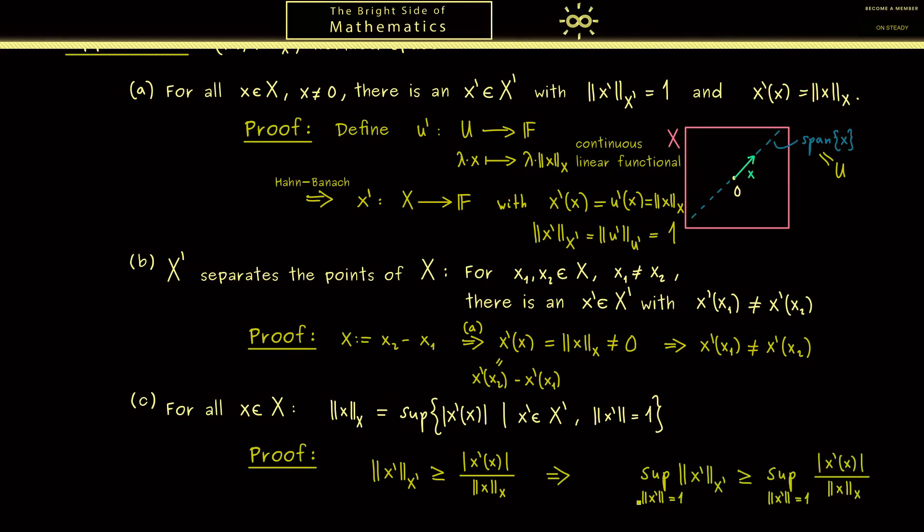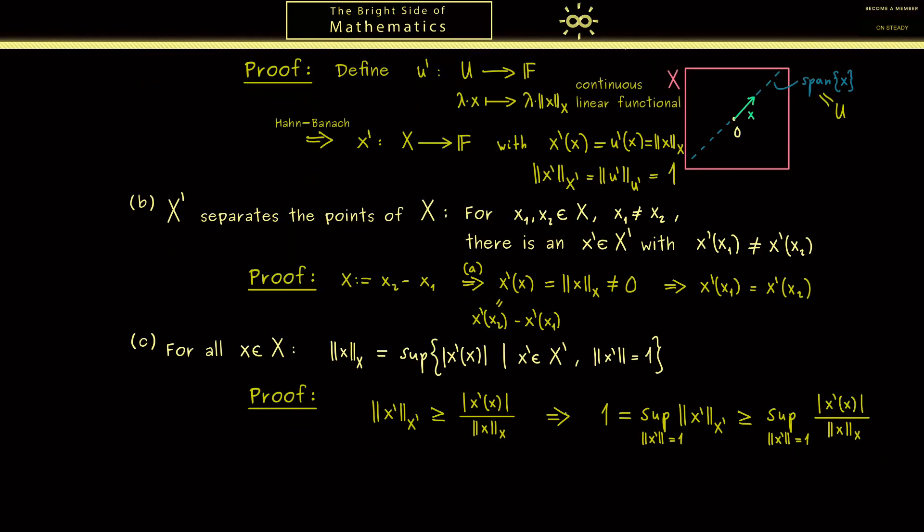Now you see the only thing we have to do is bring this norm of x to the other side and then we have one of the two inequalities we need to show. Okay let's write this down and then we go to the other inequality.